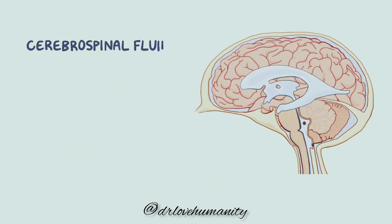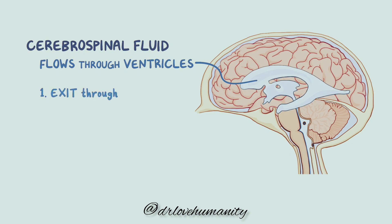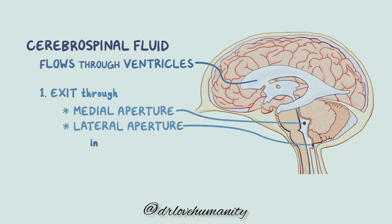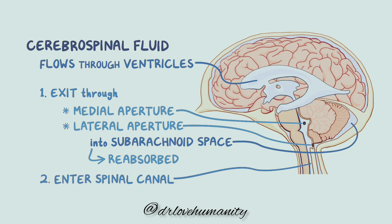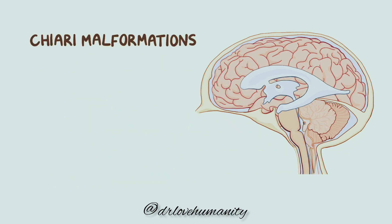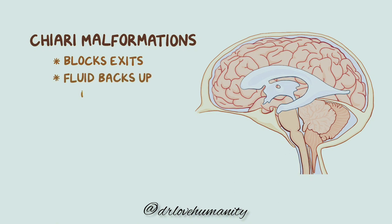Normally, cerebrospinal fluid would flow through the four ventricles of the brain, and after the fourth ventricle, the fluid would have two options: it could enter the ventricular system through openings called the medial and lateral apertures and into the subarachnoid space where it's reabsorbed, or alternatively, the fluid could go into the spinal canal. In Chiari malformations, however, the displacement of the cerebellum ends up blocking the openings where cerebrospinal fluid would exit into the subarachnoid space. As a result, the fluid backs up within the spinal canal, eventually causing the spinal canal to widen, and this leads to syringomyelia.